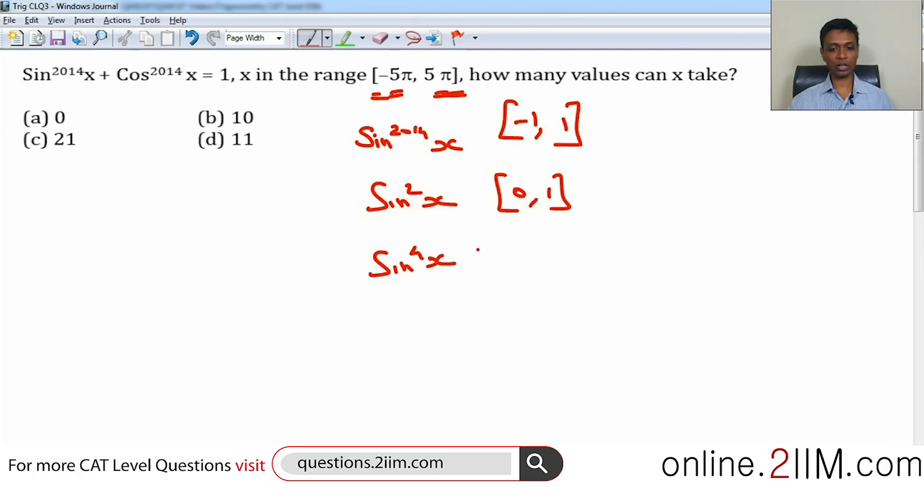So if you take sin⁴(x), the magnitude will be even smaller than sin²(x). Sin⁶(x) will be smaller than sin⁴(x), the number will keep on shrinking. It will shrink so much that sin^2014(x) is practically 0, because I am not just squaring this number, I am squaring this number and then multiplying it by sin²(x) and then sin²(x). Cubing, ^4, ^5, ^6, the number will progressively shrink.